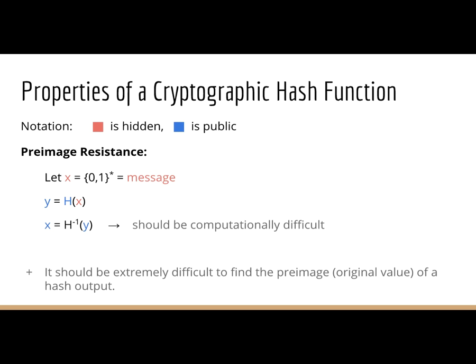We can define a cryptographic hash function as a mapping from an arbitrary bit string to any fixed-size bit string. You'll notice this notation uses the star, which means arbitrary bit string. A hash function — at least a cryptographic hash function — has to be deterministic, so the same input always yields the same output. If I pass in five and get some blob, I should always get that same blob whenever I pass five in.